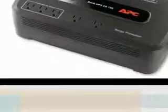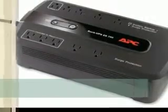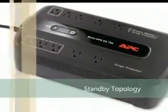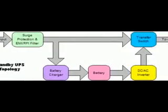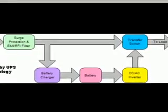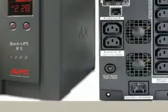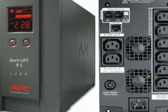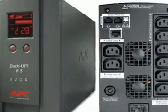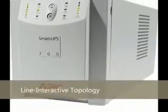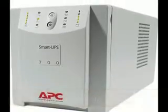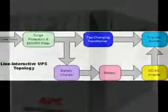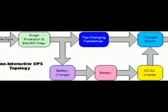In the standby topology, the load is powered directly from the line. On the standby UPS, when the power fails, the UPS instantaneously switches to the battery. The line-interactive topology is very similar to the standby UPS topology.